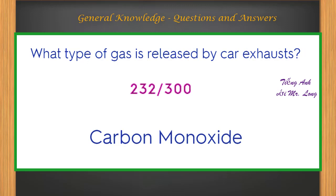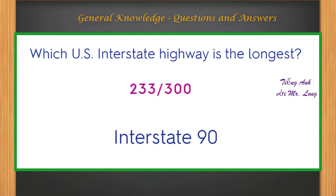What type of gas is released by car exhausts? Carbon monoxide. Which U.S. interstate highway is the longest? Interstate 90.